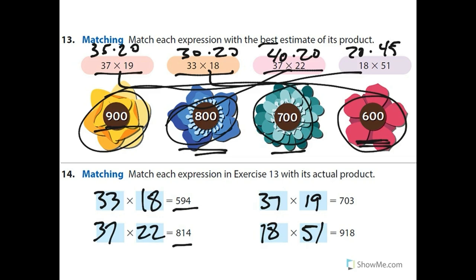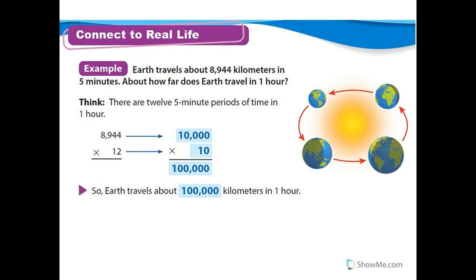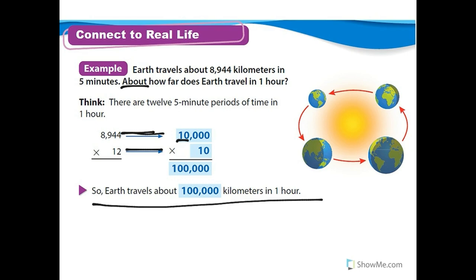Let's connect this to real life. Earth travels about 8,944 kilometers in five minutes. How far does the Earth travel in one hour? There are 12 five-minute periods in one hour, because 5 times 12 is 60. So they're going to estimate — because it says 'about' — rounding 8,944 to 10,000, and 12 to 10. 10,000 times 10 gives 100,000. So Earth travels about 100,000 kilometers in one hour.